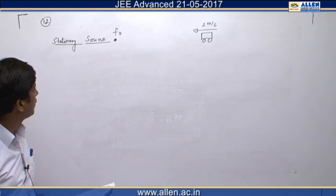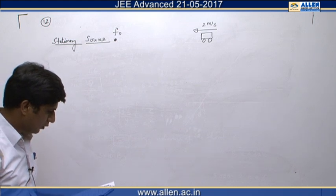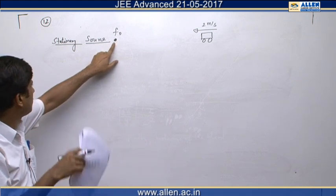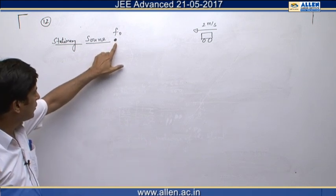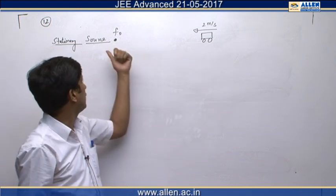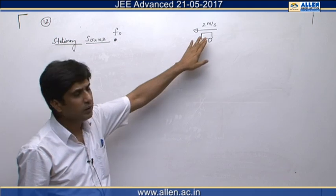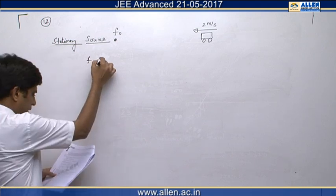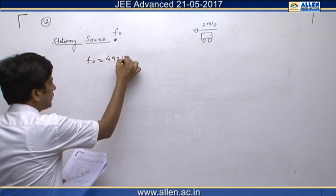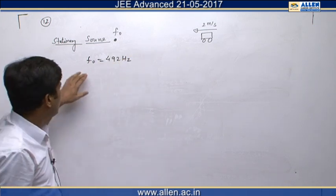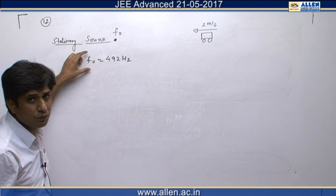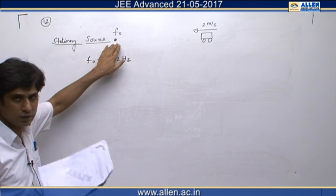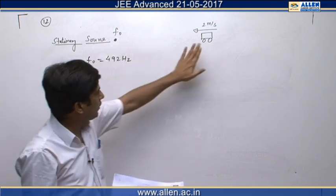In question number 12, we have to find the beat frequency observed by an observer kept at the place of the source. A car is moving towards a stationary source with velocity 2 meters per second. This source is emitting sound of frequency f₀, where f₀ is 492 hertz. We have to find the beat frequency made by superposition of two waves: one produced by the source itself and the other reflected by the car.